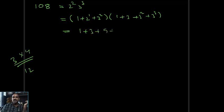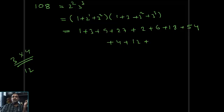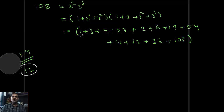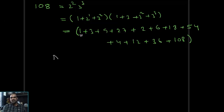Multiplying out: 1 + 3 + 9 + 27 + 2 + 6 + 18 + 54 + 4 + 12 + 36 + 108. The expression contains 12 terms: those are 1, 2, 3, 4, 6, 9, 12, 18, 27, 36, 54, 108 — the factors of 108. No other factors exist for 108. So there are 12 factors for 108.